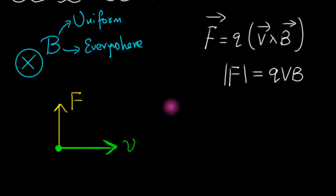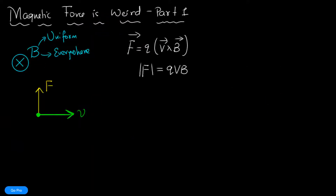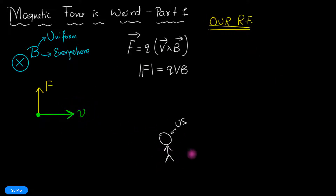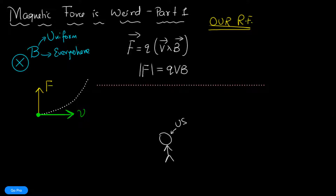Now, who is doing this calculation? We are. So I'm going to call this our reference frame. That means this velocity is the velocity of the charged particle as seen by us. Remember, velocity is frame dependent — if you change reference frames, velocity changes. From our reference frame, the charged particle is going to move in a circular arc.